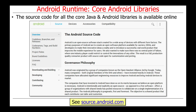The source code for all the core Java and Android libraries is available online at source.android.com and through GitHub. Note that the source code for the Android platform discussed here is released under a different license than the source code for the Android Linux portion of Android, and so it's available in a different repository because it has a different licensing regime.